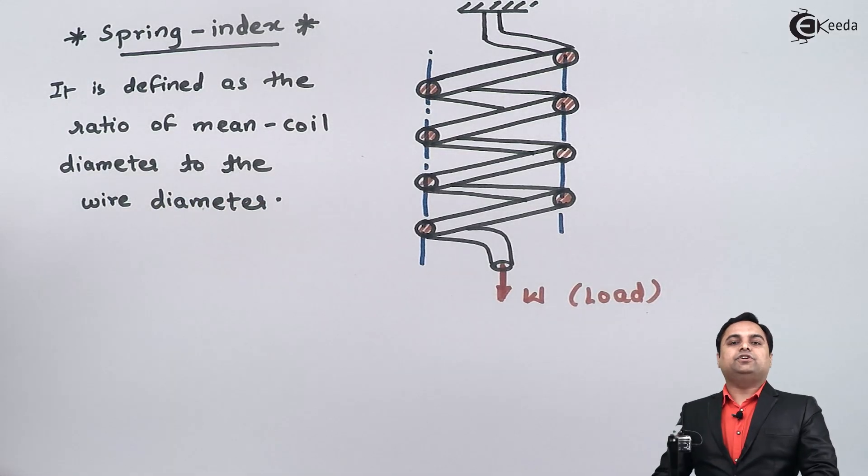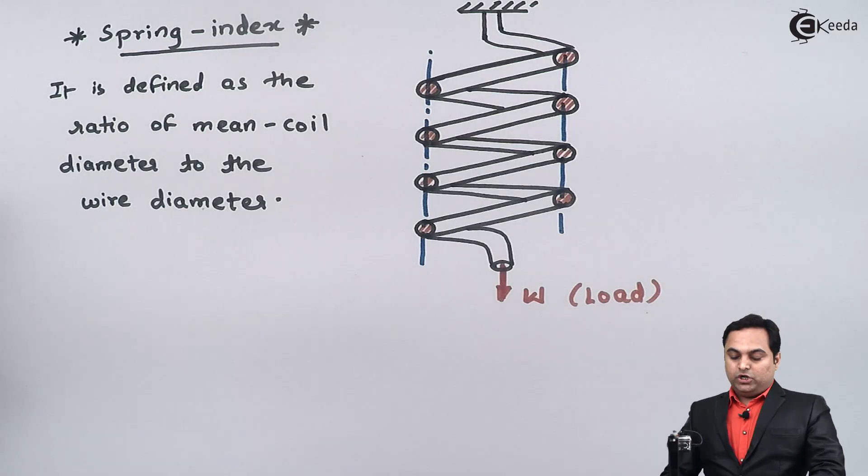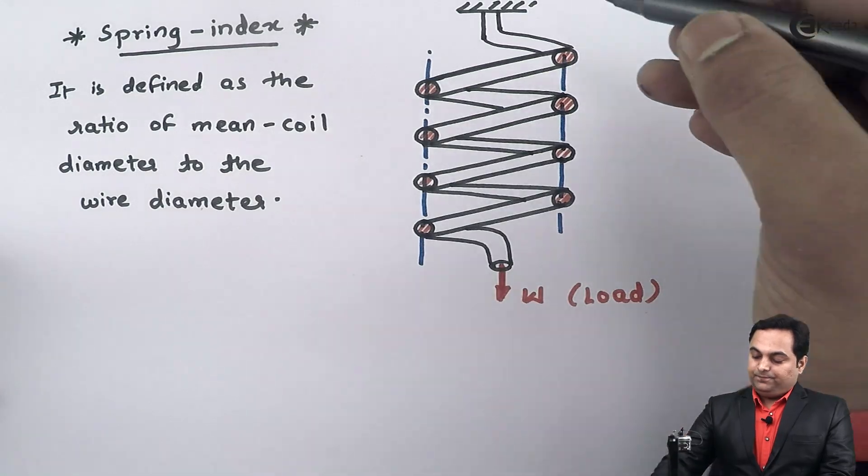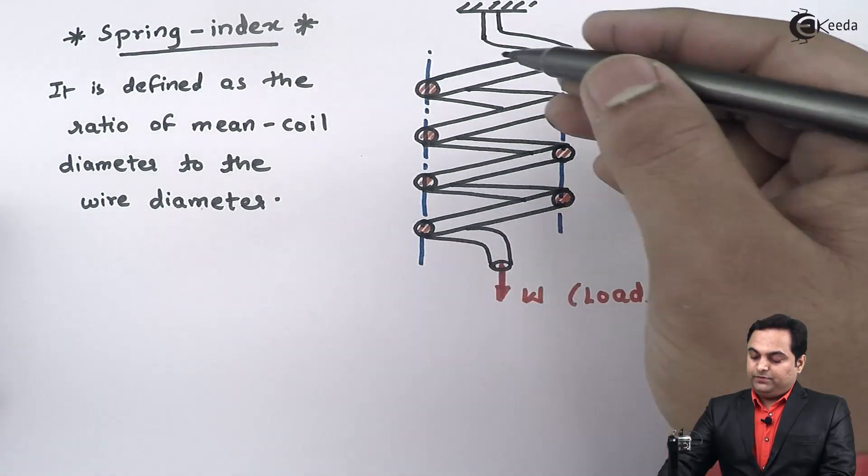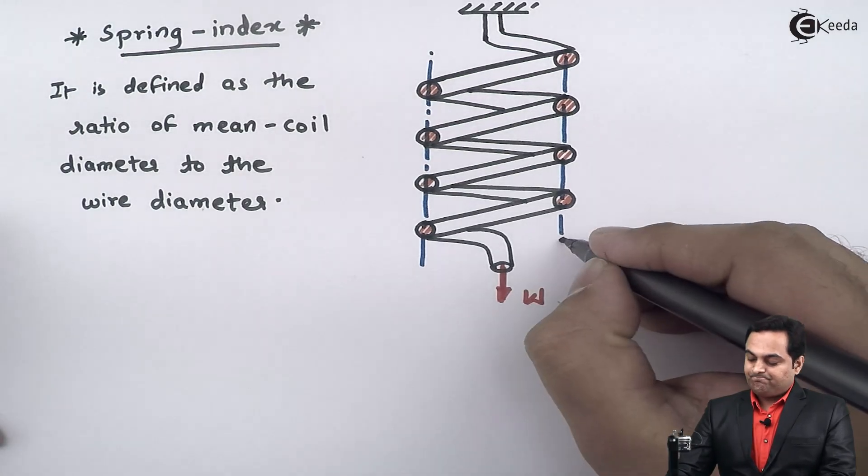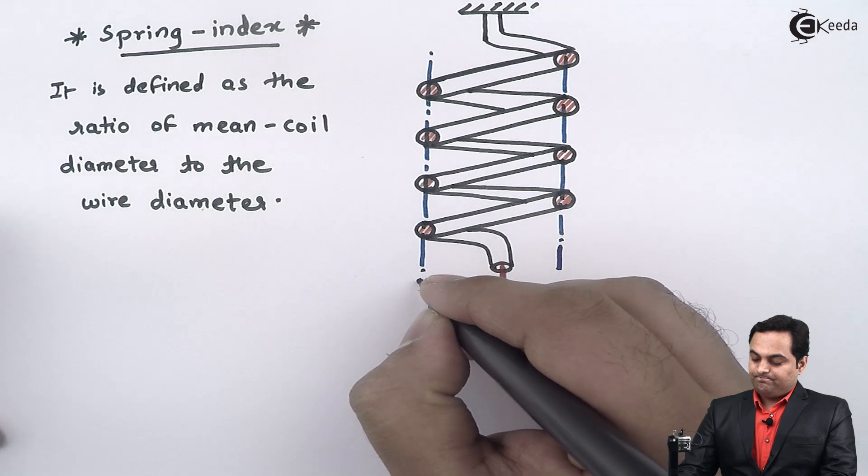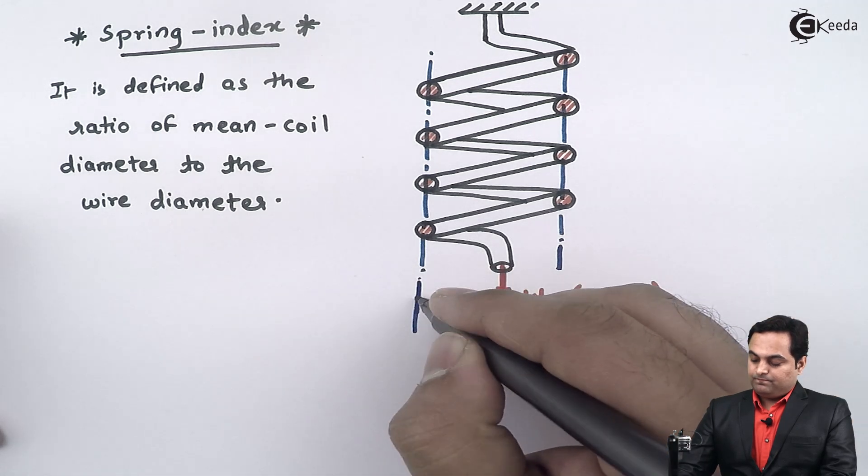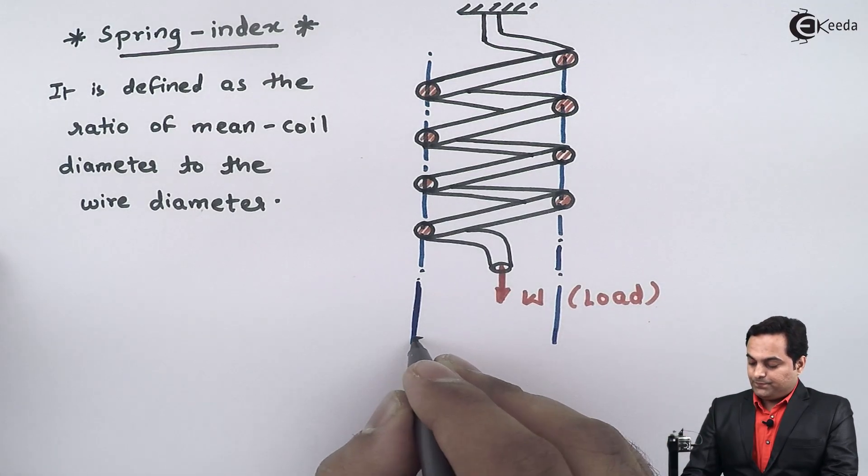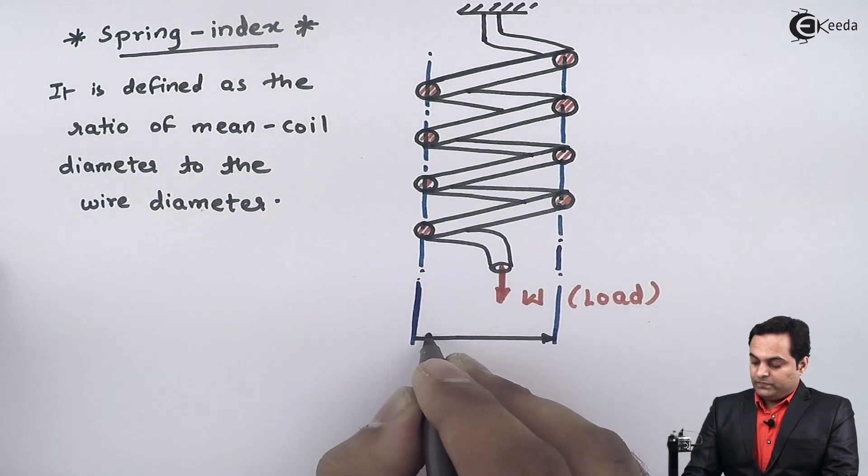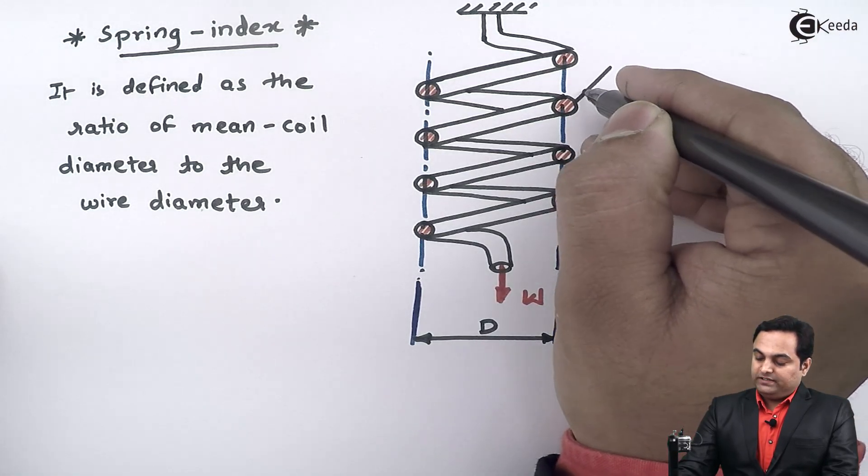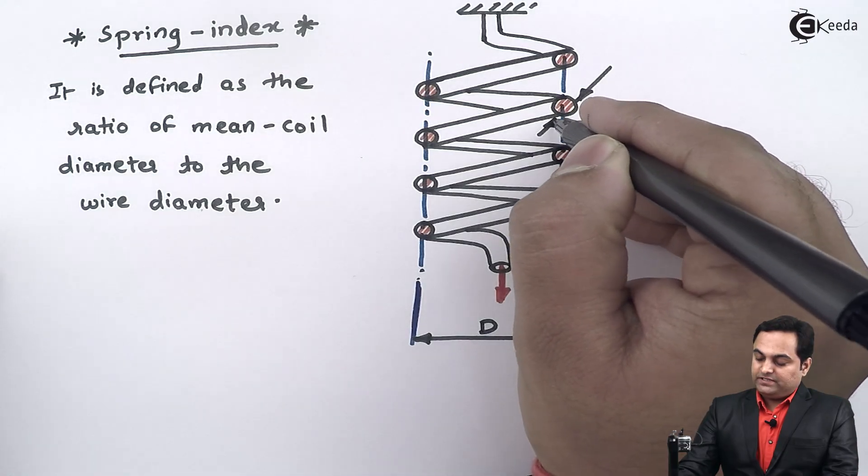This is the definition of spring index. When we talk about mean coil diameter, this distance between the two blue lines indicates the mean coil diameter, denoted by capital D. The wire diameter is denoted by small d.